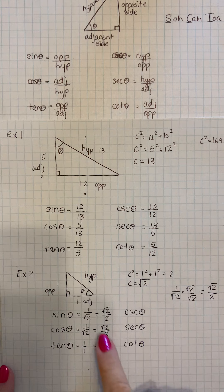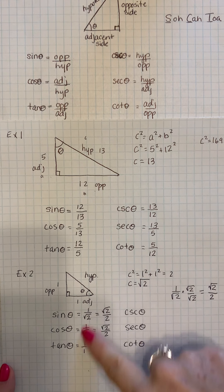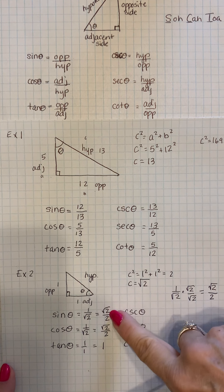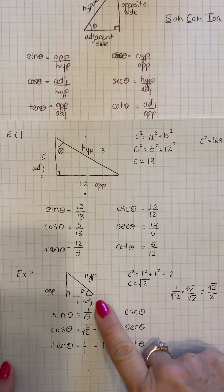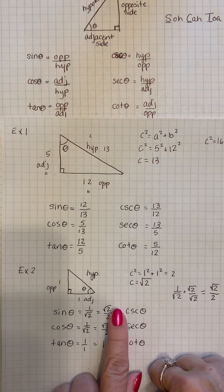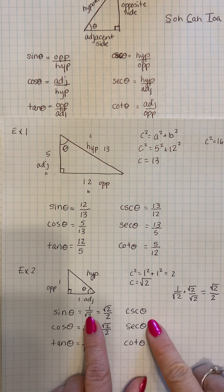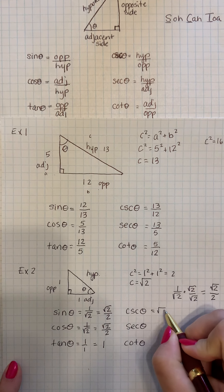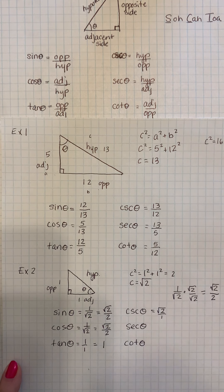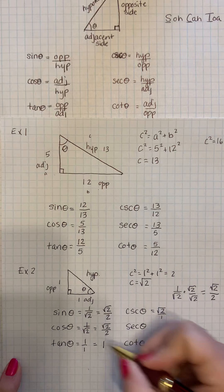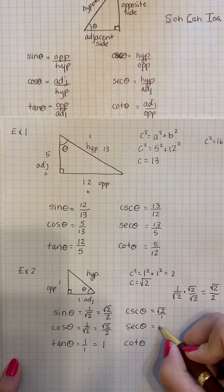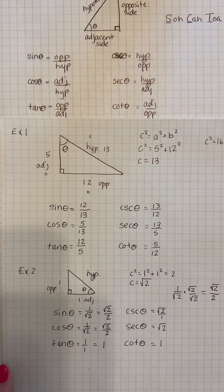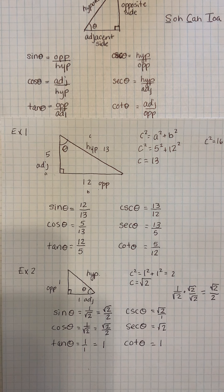The reason I kept the un-rationalized forms is so I don't have to rationalize again to find the reciprocals. The reciprocal of one over the square root of two is just the square root of two over one — so the cosecant is root two, the secant is root two, and the cotangent is one.